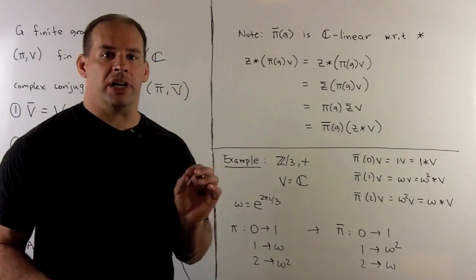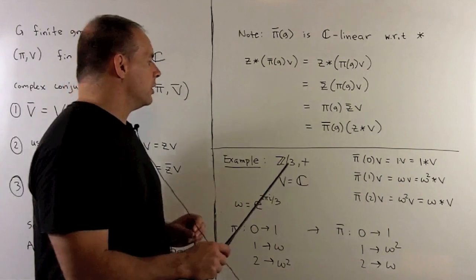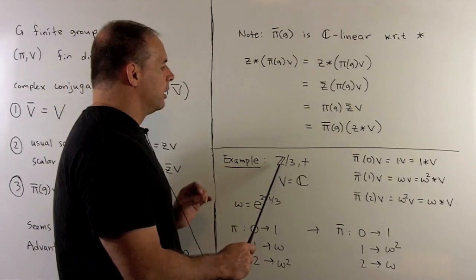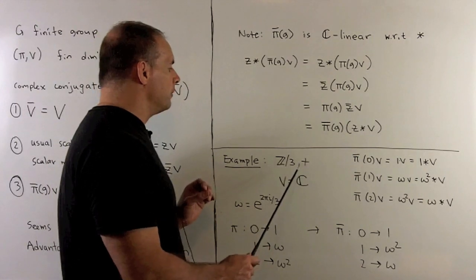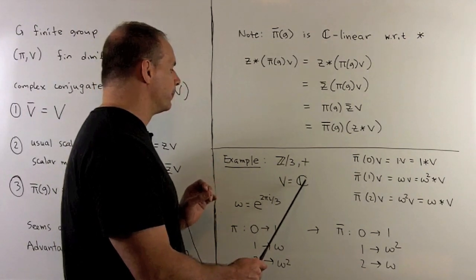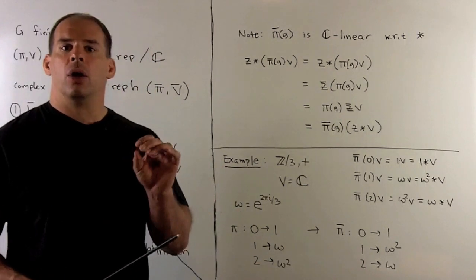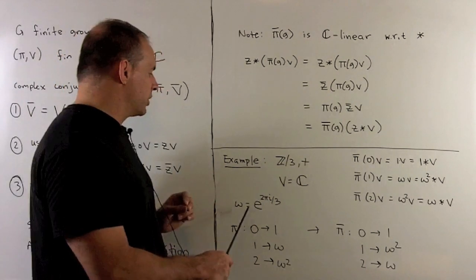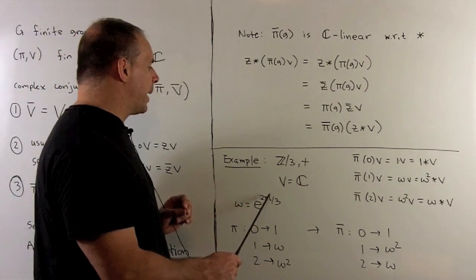Now, let's look at a concrete example. If I take Z mod 3 under addition, our V is just going to be the complex numbers. We'll let omega be this third root of unity, E to the 2 pi I over 3.